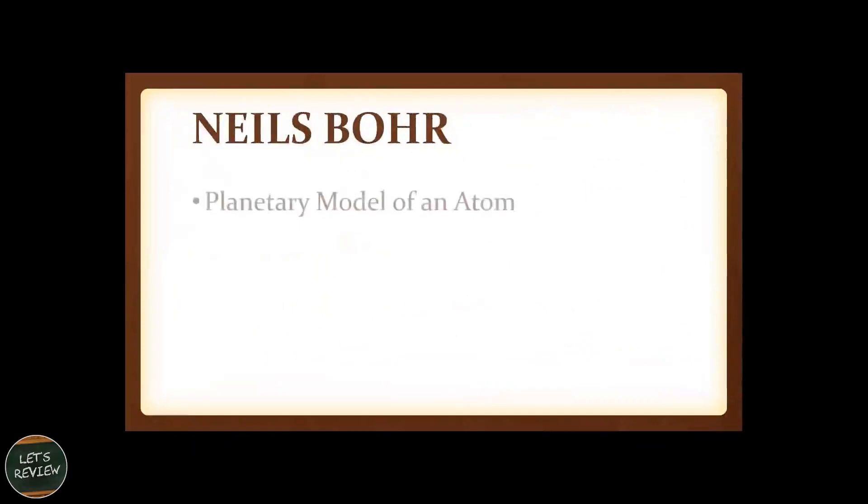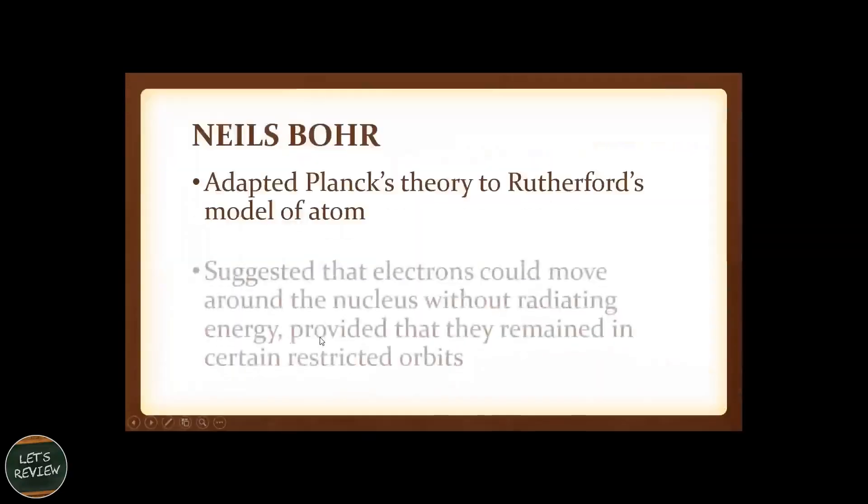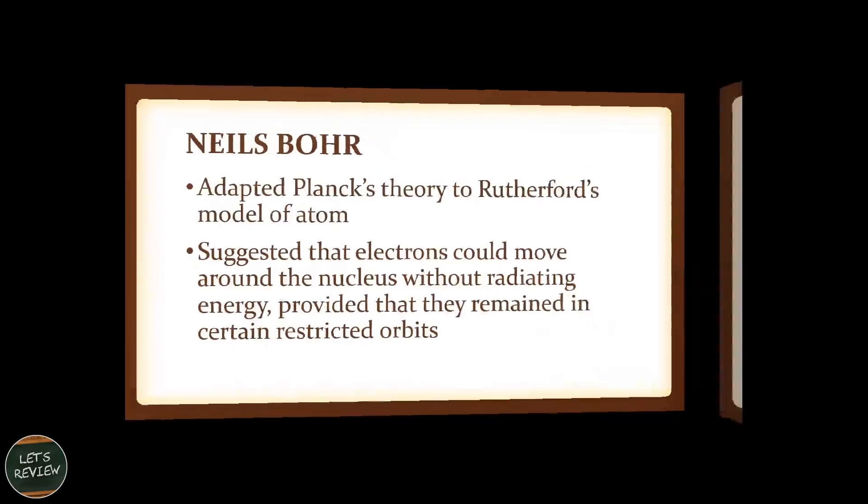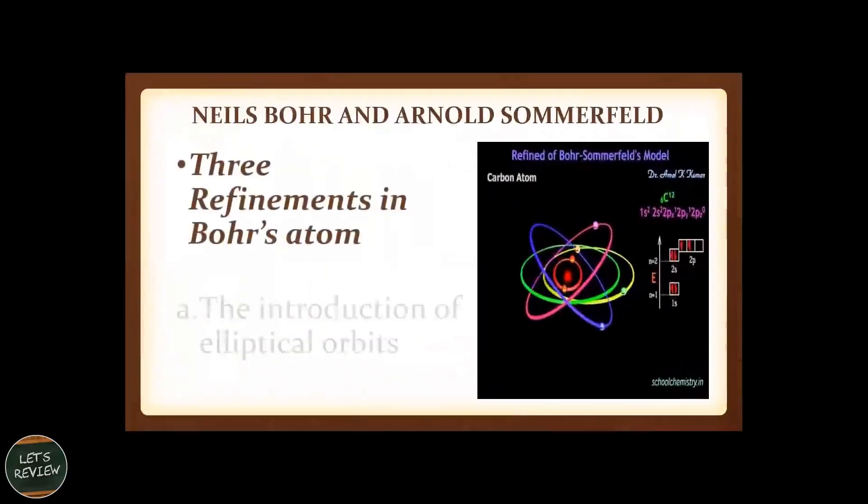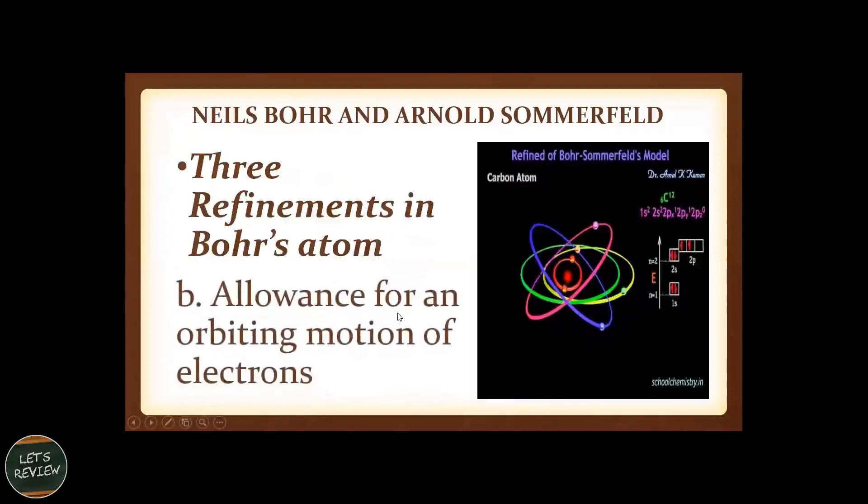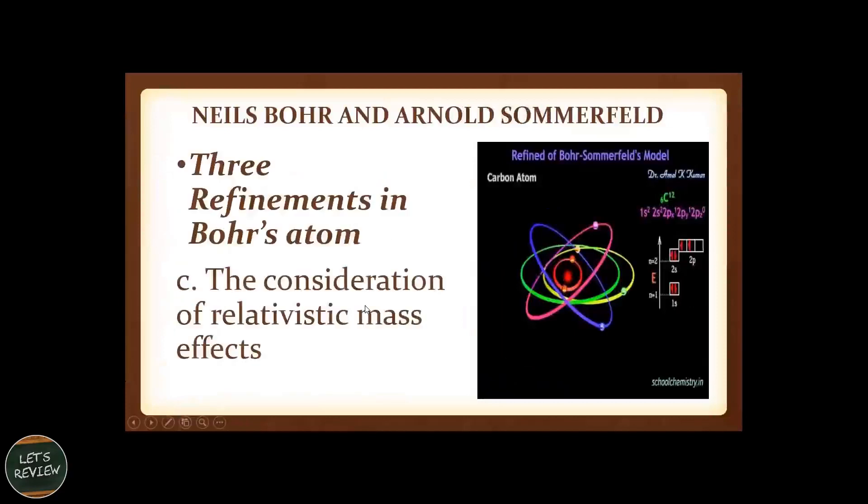In Niels Bohr, he called it the planetary model of an atom. He adapted Planck's theory to Rutherford's model of atoms. He suggested that electrons could move around the nucleus without radiating energy, provided that they remained in certain restricted orbits. These are the three refinements in Bohr's atom: the introduction of elliptical orbits, allowance for an orbiting motion of electrons, distance of the orbit, and the consideration of relativistic mass effects.